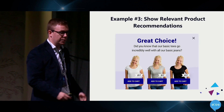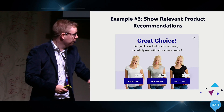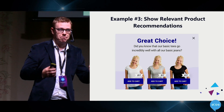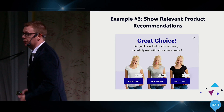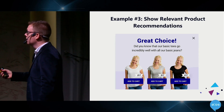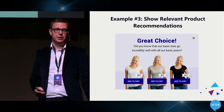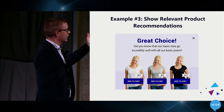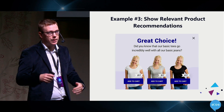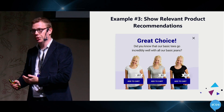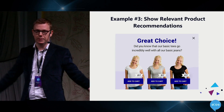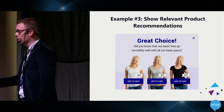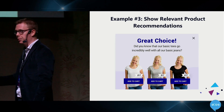A third example is to show relevant product recommendations. If someone added a basic tee to the cart, or actually bought one and comes back to the site, show them that a pair of jeans is a good match — here are three examples, go take a look. That's a way to use your data more intelligently, rather than just showing 'here's our new jeans' to someone who maybe just bought a pair of jeans.